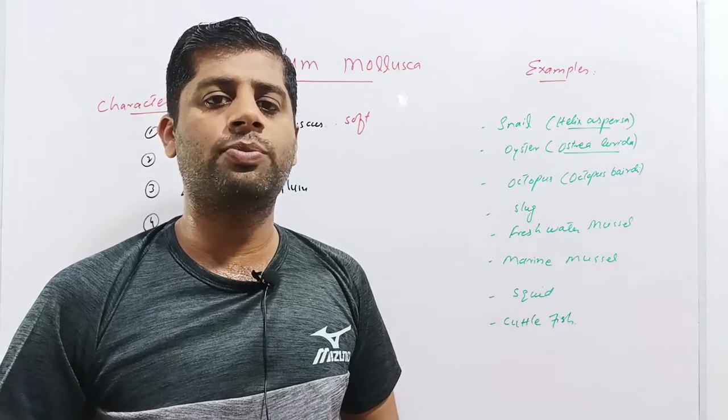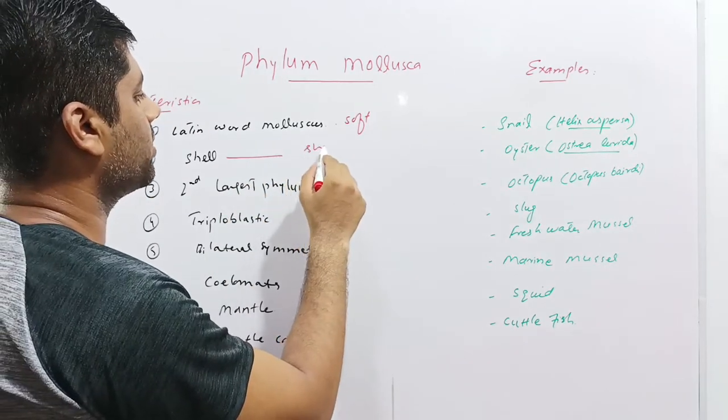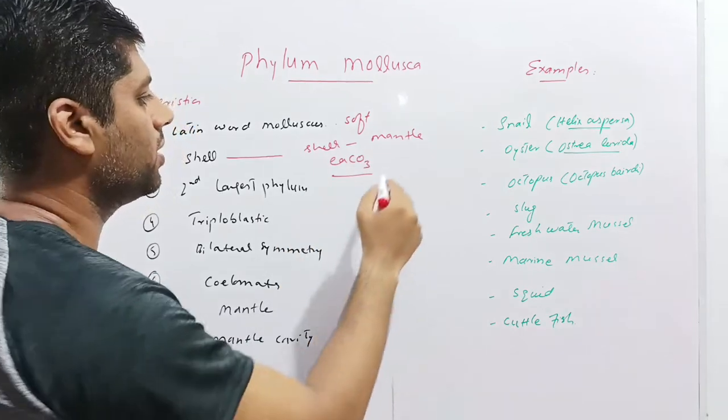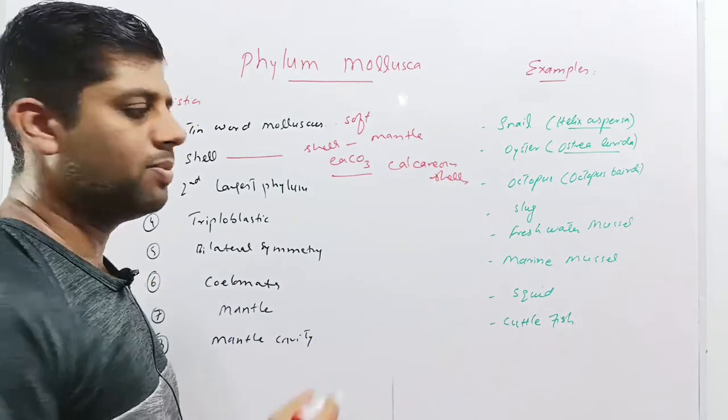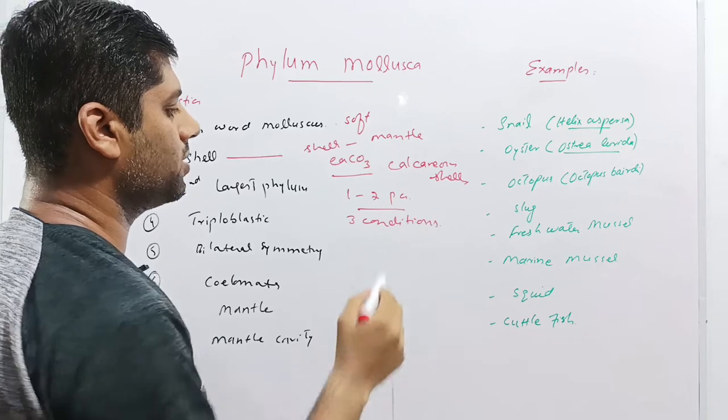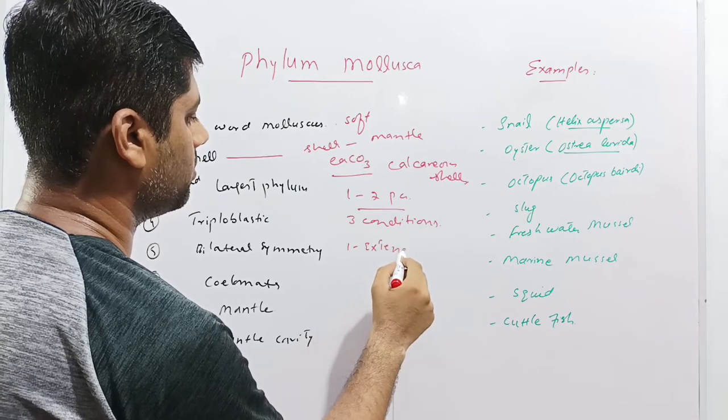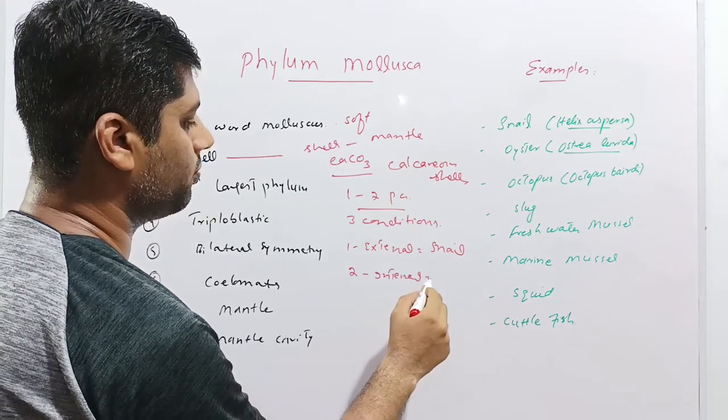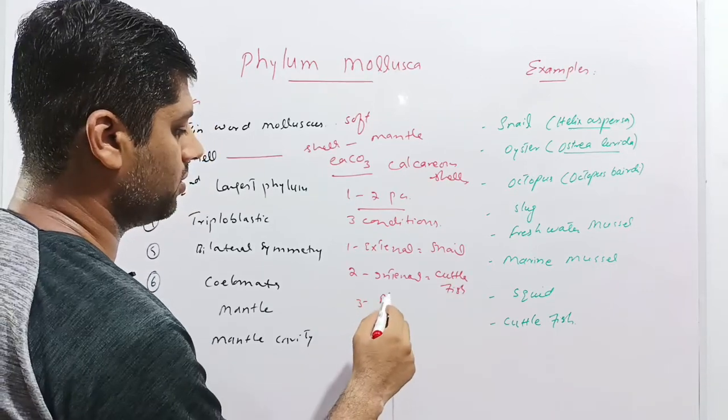Basically, the molluscs have soft bodies. So in order to protect these soft bodies, nature has gifted them with shells. These shells are secreted from mantle and are made up of calcium carbonate. These shells which are made up of calcium carbonate are also called calcareous shells. These shells may be of one to two pieces and has three conditions. The calcareous shells secreted by the mantle have three conditions. First, these may be external, for example in case of snail. These may be internal, for example in case of cuttlefish, or even the shell may be absent. For example, in octopus there is no shell.